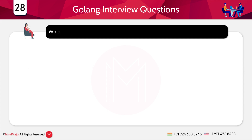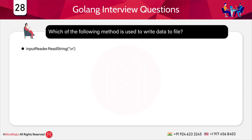Which of the following method is used to write data to a file? Options: a) inputReader.ReadString('\n'), b) log.Fatalf, c) bufio.NewReader(os.Stdin), d) ioutil.WriteFile. The answer is d) ioutil.WriteFile. To use it, you need to import the ioutil package and then use the WriteFile method to write data to a file.